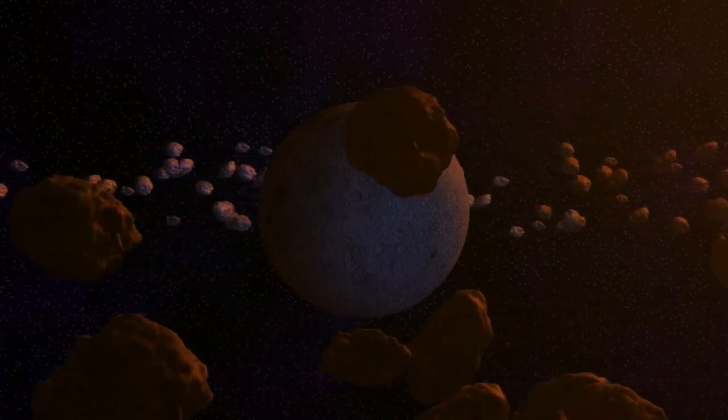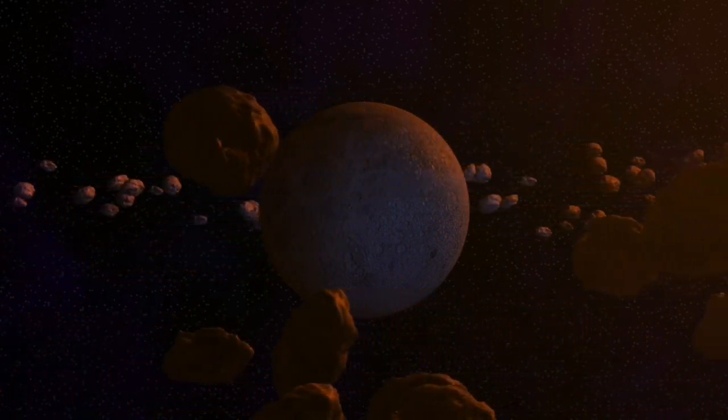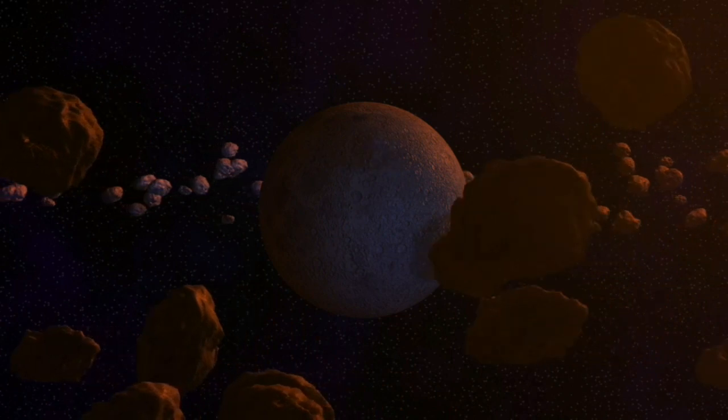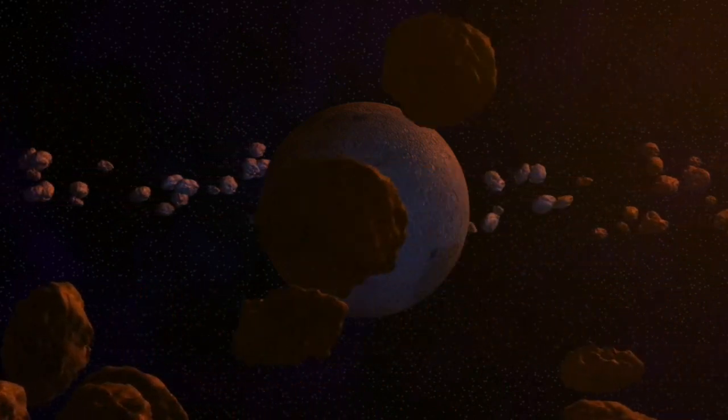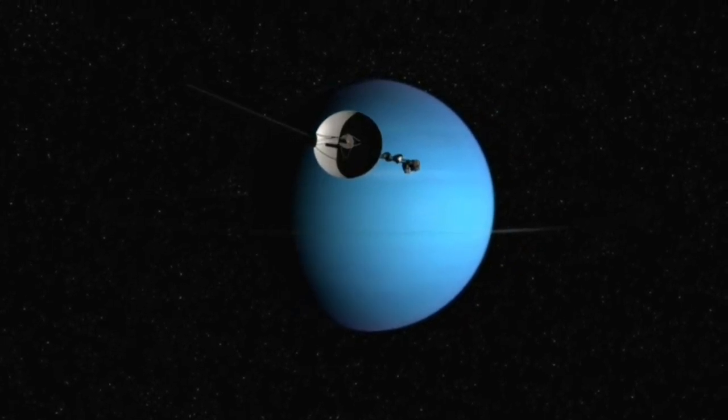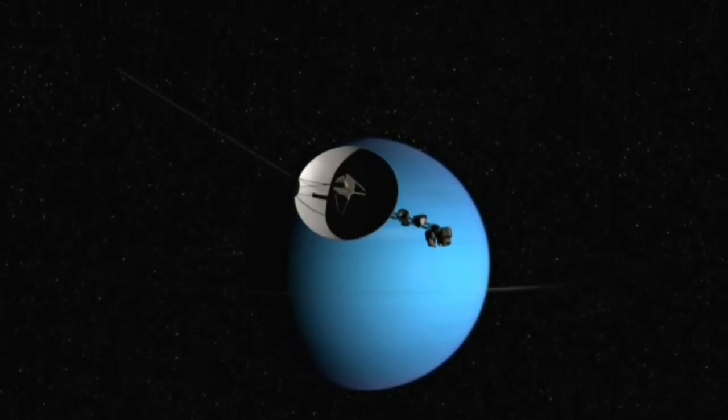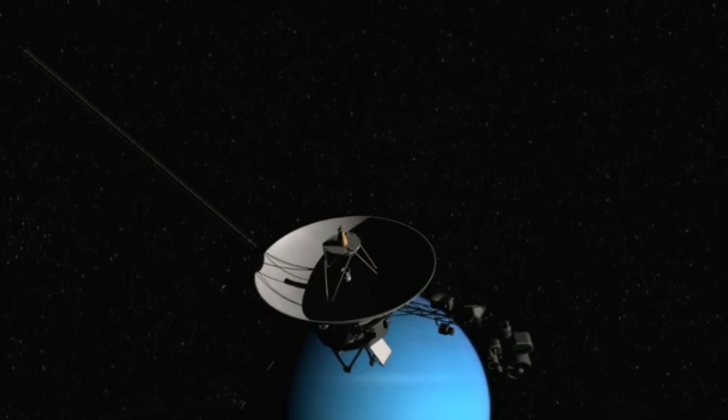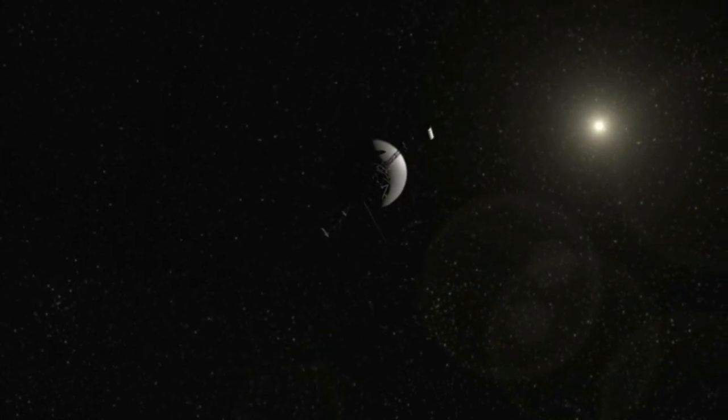However, the hunt restarted when further research revealed that Pluto was too small to affect Neptune and Uranus. Based on data collected from Voyager 2's flyby of Neptune in 1989, NASA announced that there were no anomalies in the orbits of the outer planets at all. At this stage, it seemed that they had been searching for something that did not exist.